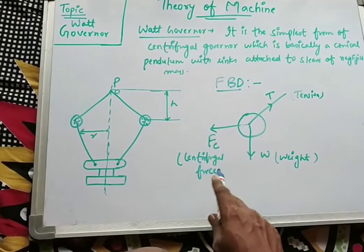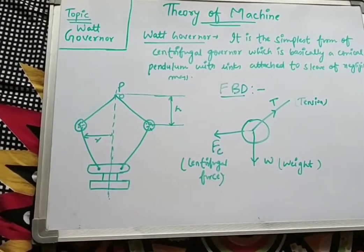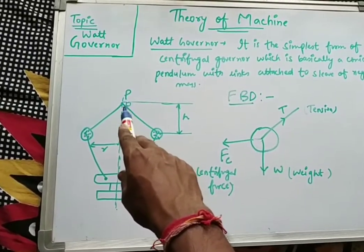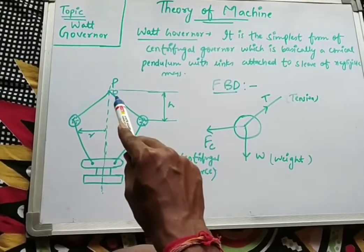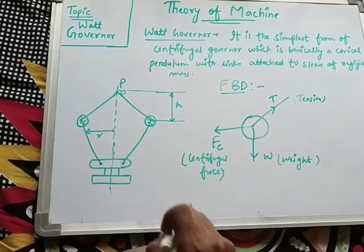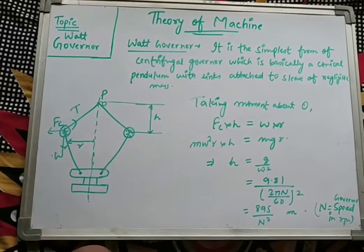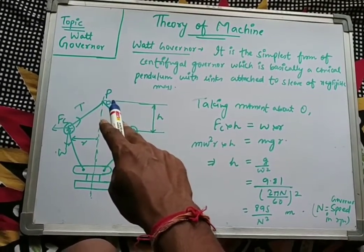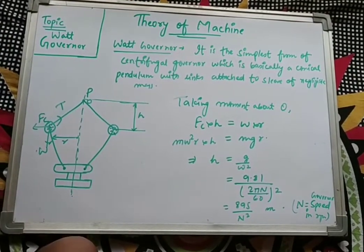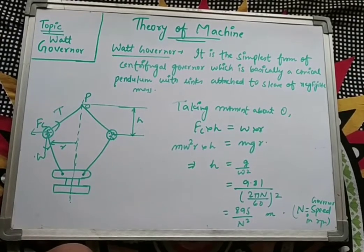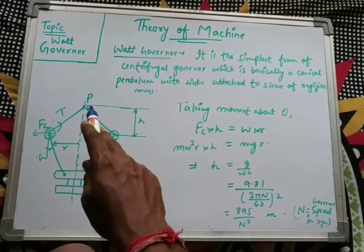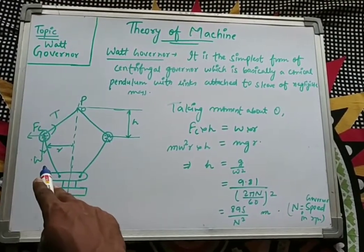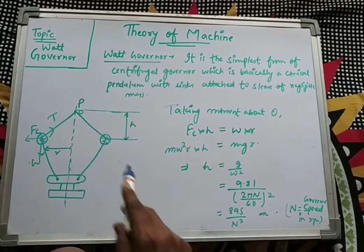For solving the Watt governor and finding the height, we denote pivot as P and the joint point as O. Taking the moment about point O to calculate the height of the governor, we identify forces acting with a perpendicular distance from O. Since tension T acts along the link passing through O, it has no perpendicular distance and is not considered. The two forces to consider are Fc and W.